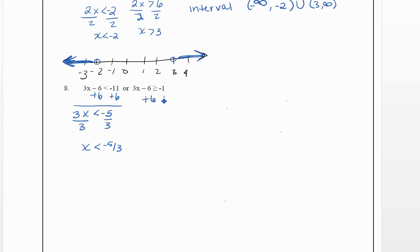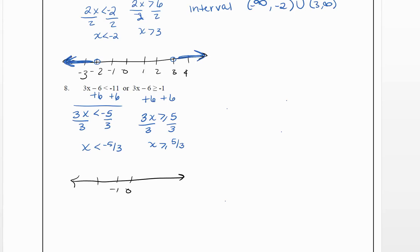For the right piece, we add 6 to both sides to get 3x is greater than or equal to 5, then divide both sides by 3, giving x is greater than or equal to 5 thirds. Graphing this: negative 5 thirds is about negative 1.67, so we place an open dot there going left. Then 5 thirds is about 1.67, so we place a closed dot there — since it's greater than or equal to — and shade to the right.